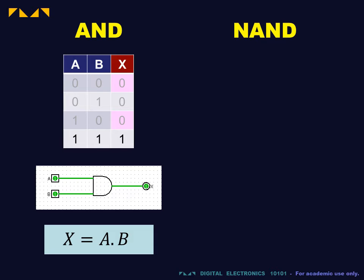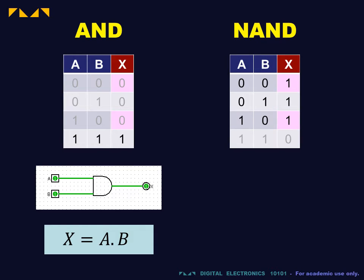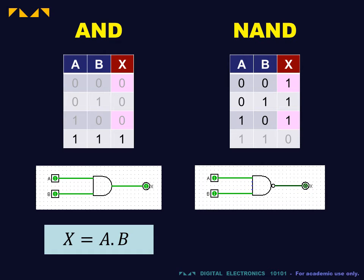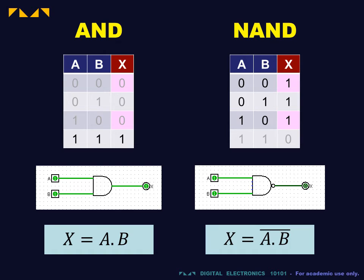The inverse of the AND gate is called the NAND gate. Its output is false if and only if both inputs are true. The NAND gate is represented by an AND gate with a bubble at the output. The Boolean expression reads x is equal to a NAND b.